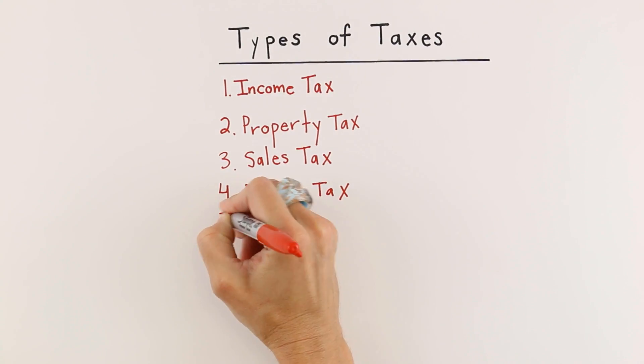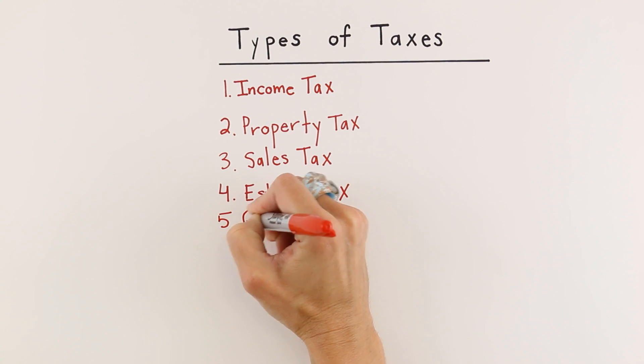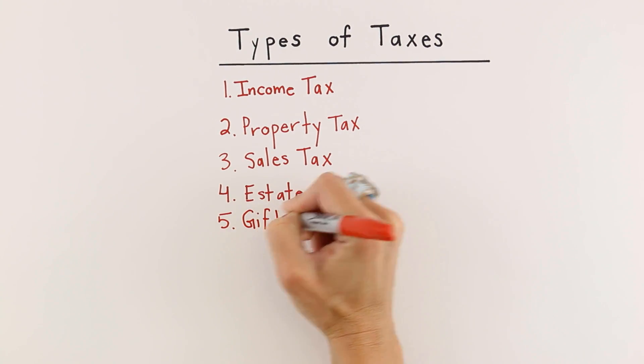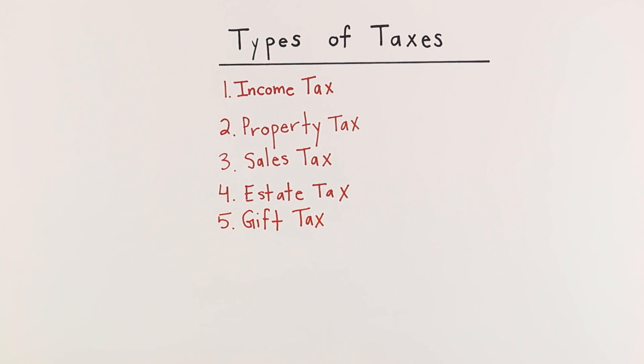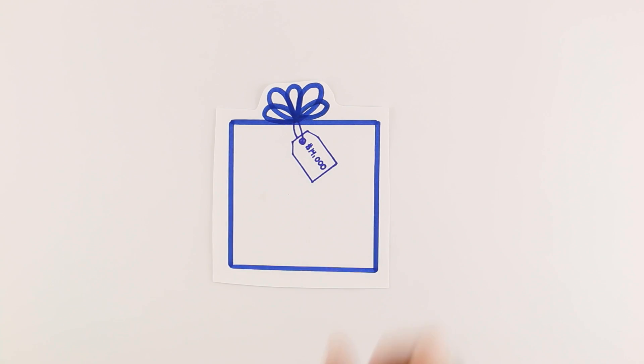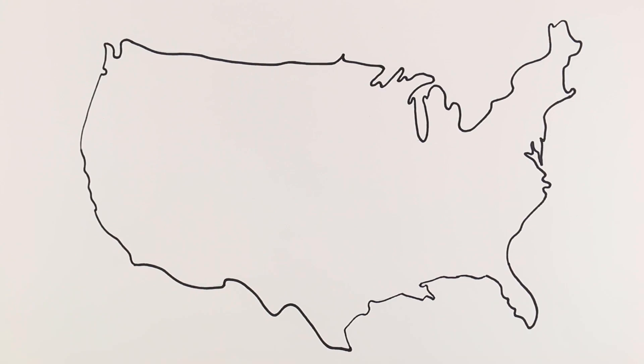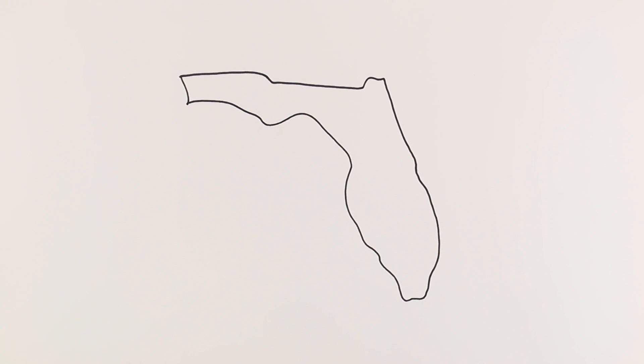Which brings us to the fifth type of tax we will study today: the gift tax. Currently, if you give a gift of more than $14,000 per year, you must pay the federal government and sometimes your state government a percentage.